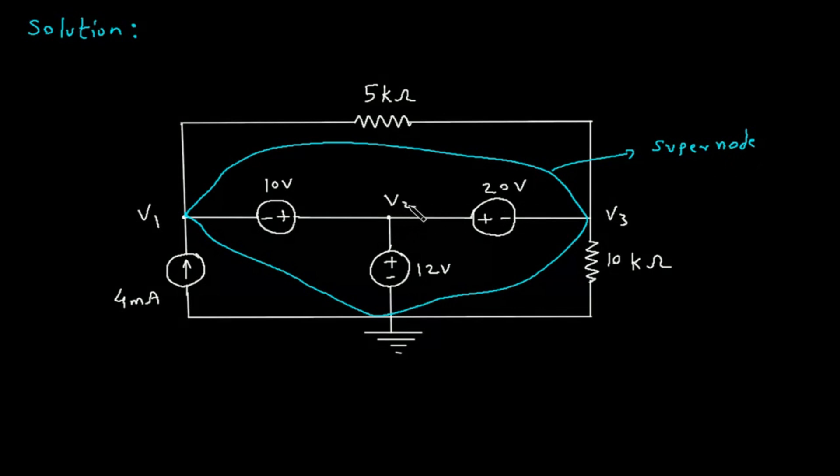Also, we can see that V2 is directly connected to ground. So, V2 is equal to 12V.